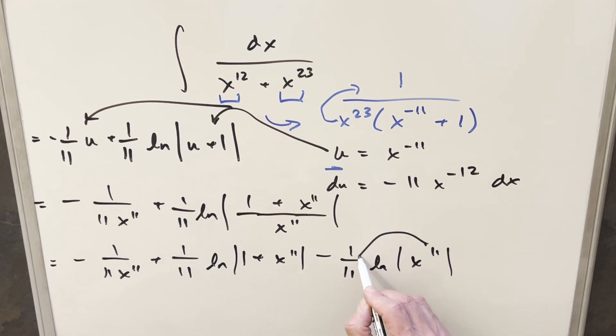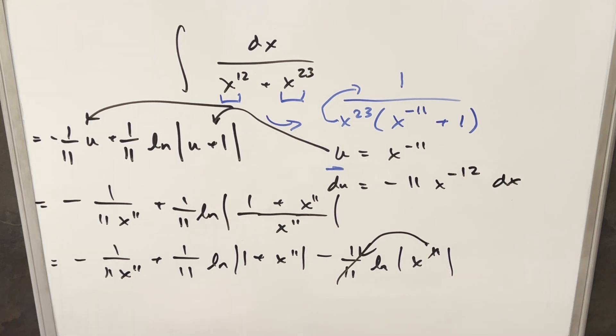But then by exponent properties, I can bring this out here. 11 is going to just cancel with 11. And so for the final solution to this, we're going to have minus 1 over 11 x to the 11 plus 1 over 11 natural log 1 plus x to the 11. And this here is just ln x. We're going to have minus ln x plus c and that's it.